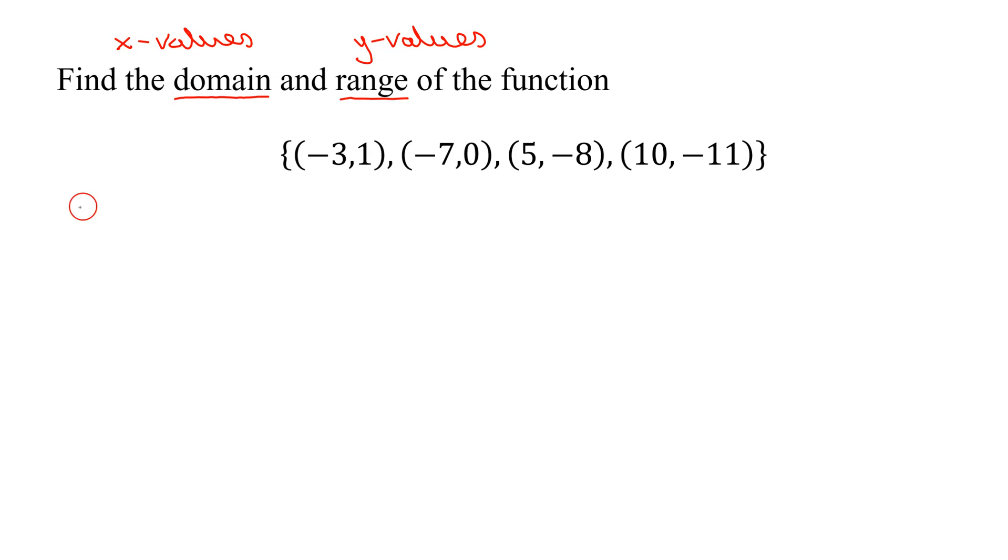So whenever we have a function that's given as a set of ordered pairs, it's very easy to find the domain and the range. The domain are just all the x values. So what are my x values? Negative 3, negative 7, 5, and 10. And we've written the domain as a set of numbers. But one thing,